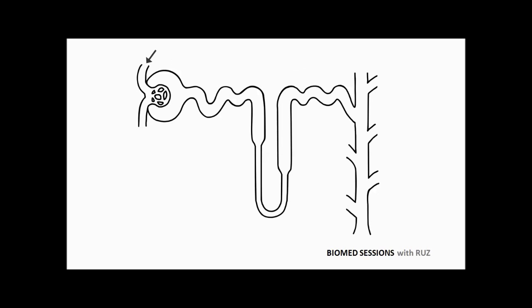At this end of the nephron, blood enters in via the afferent arteriole, passes through a network of capillaries called the glomerulus and leaves via the efferent arteriole. As this occurs, components of the blood are filtered out into an area known as the Bowman's capsule.